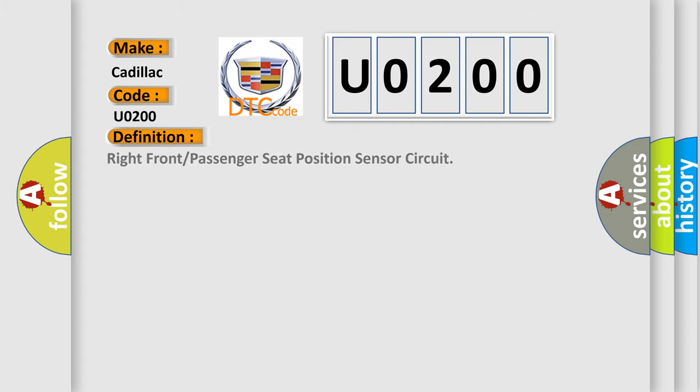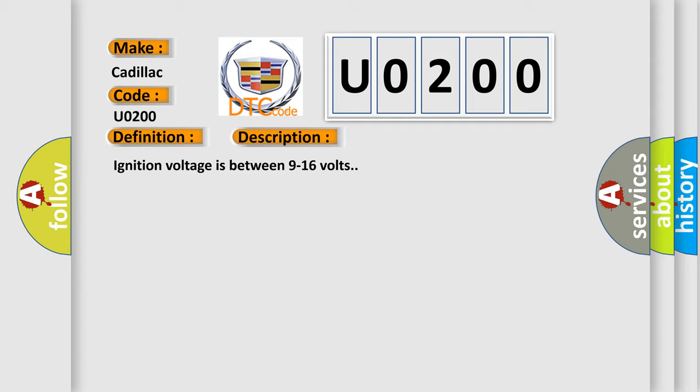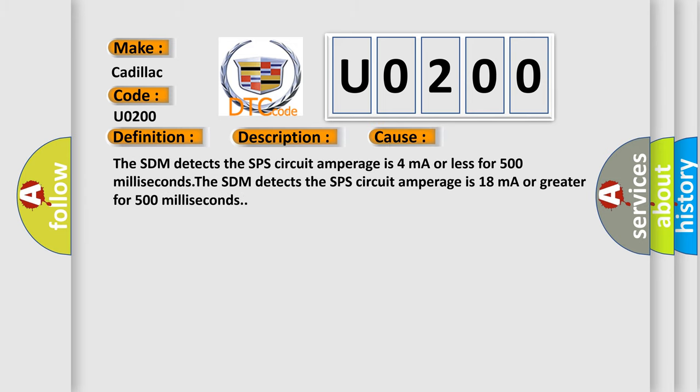The basic definition is: Right front or passenger seat position sensor circuit. This is a short description of this DTC code. Ignition voltage is between 9 to 16 volts. This diagnostic error occurs most often in these cases: the SDM detects the SPS circuit amperage is 4 milliampere or less for 500 milliseconds, or the SDM detects the SPS circuit amperage is 18 milliampere or greater for 500 milliseconds.